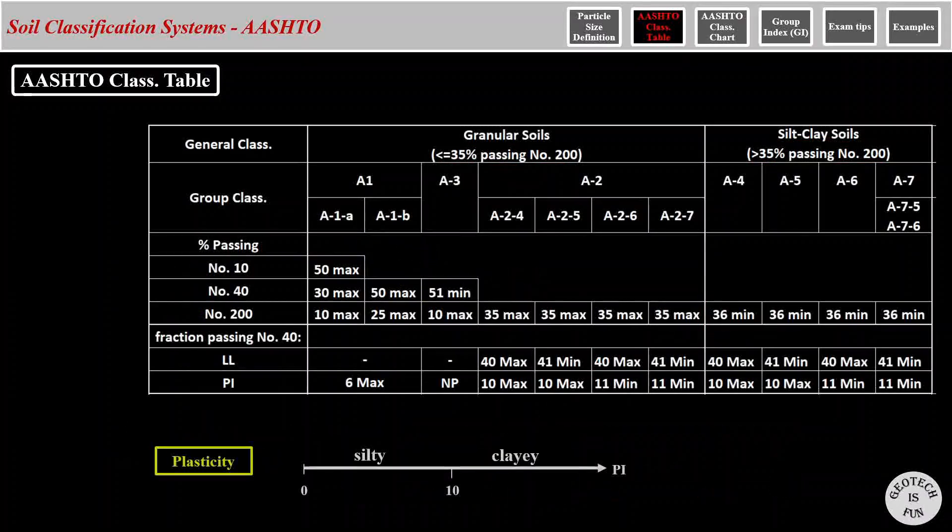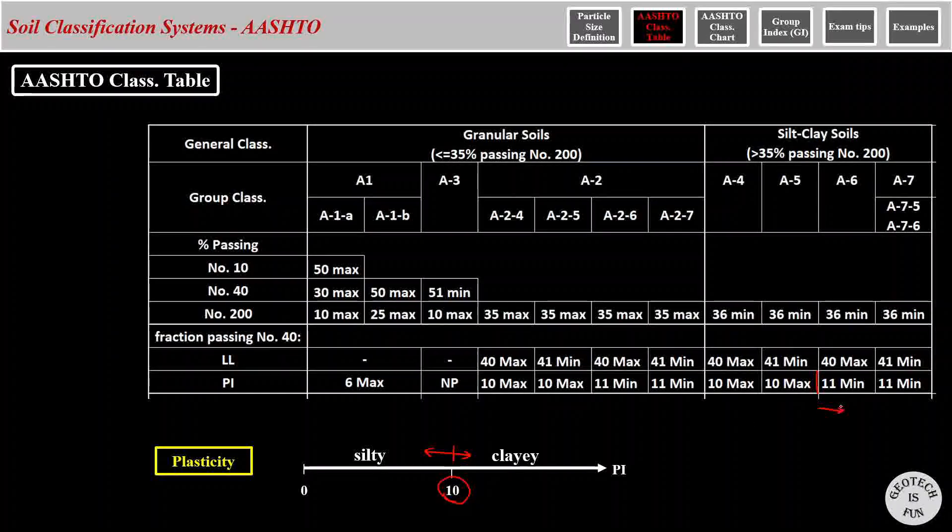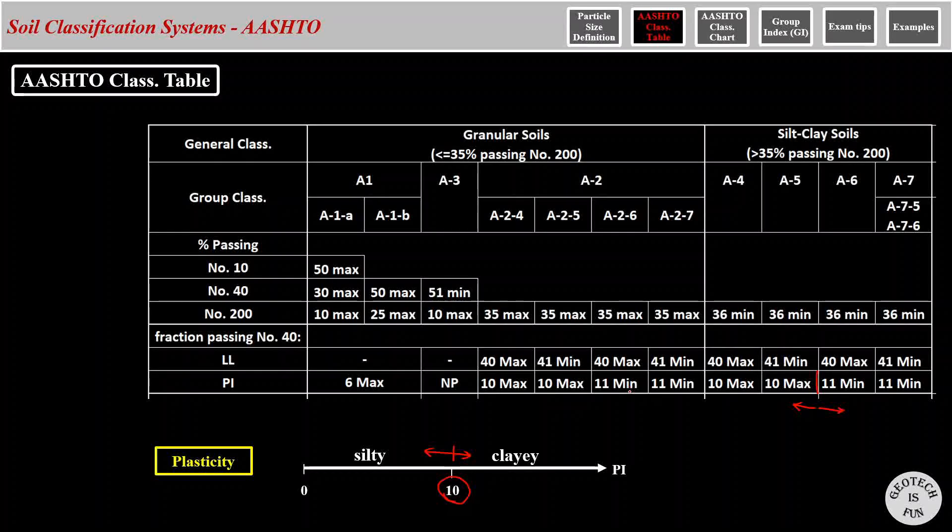In the lower portion of this table, we have plasticities. You saw earlier that plasticity index of 10 is the boundary between clay and silt. This boundary is right here in the table. Any soil with PI of more than 10 can be clay soils. And any soil with PI of less than 10 can be silty soil, as well as sandy or gravelly soils.